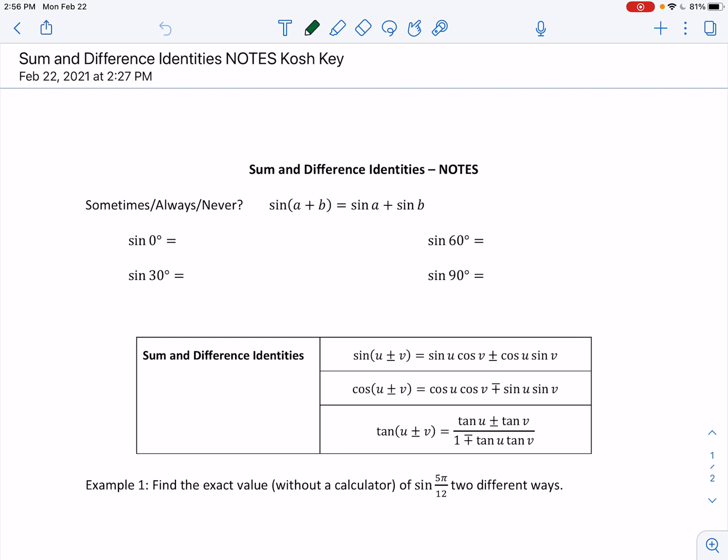Okay, so the first thing that I have here is this statement sometimes always or never true, and that is that sine of A plus B is equal to sine of A plus sine of B. So here are a few different values that I want to think about. Keep in mind, the unit circle never goes away, and so sine is my y value. Sine of 0 would be 0.